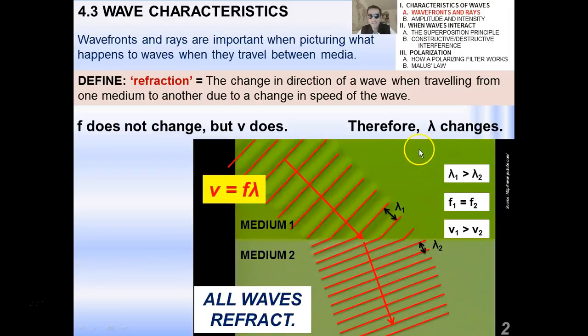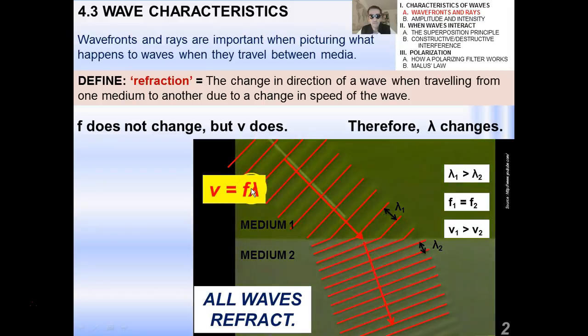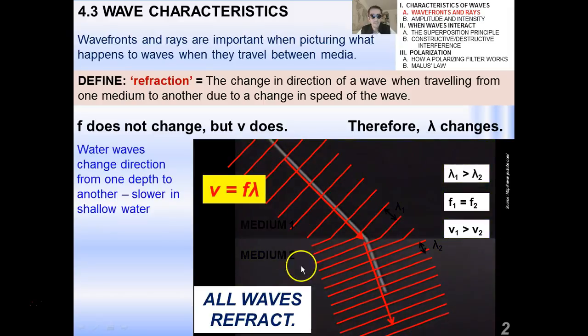Now, here's the wave equation. Again, because lambda one is greater than lambda two, which you can see from this diagram, and the frequencies are the same, the only way that that can be true is if the speed in medium one is greater than the speed in medium two. And you can see that by the wave equation if you think about the very simple algebra with V equals F lambda.